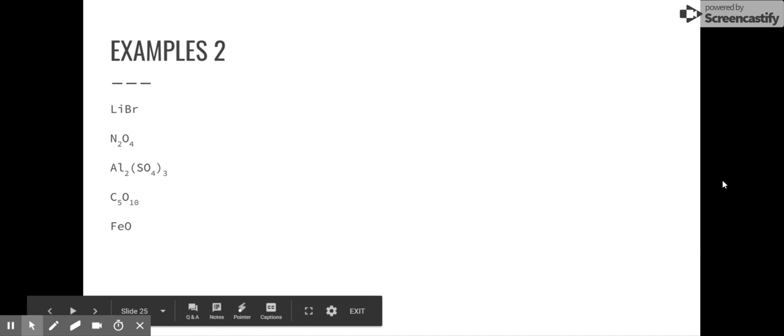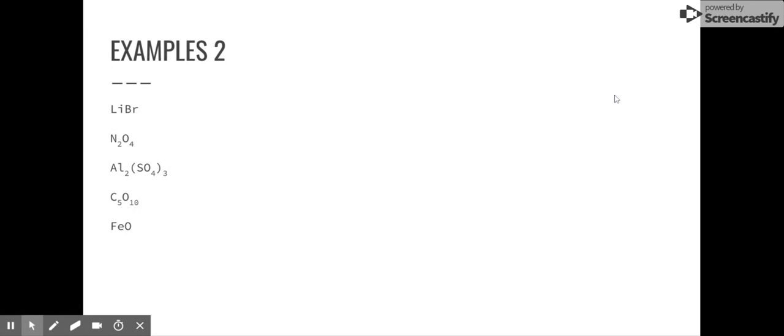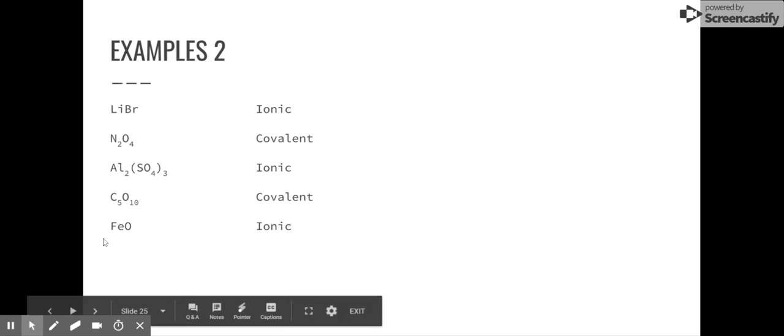We need to go the other way as well. What if we're given a formula and we need to find a name? LiBr. That's ionic. Lithium is a metal. It's an alkali metal. N2O4. All of those are covalent. Al2SO4. Well, aluminum is a metal, so it has to be ionic. C5O10. That's covalent. And FeO. That's ionic. Iron is a metal.